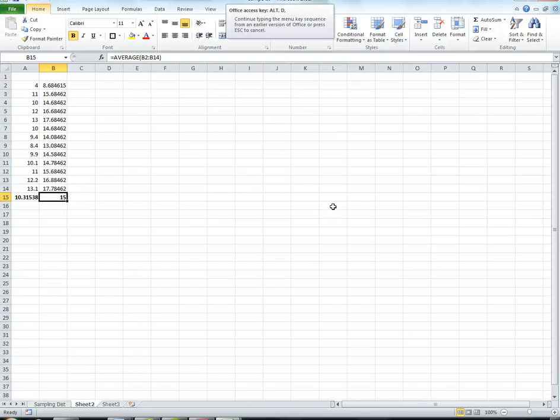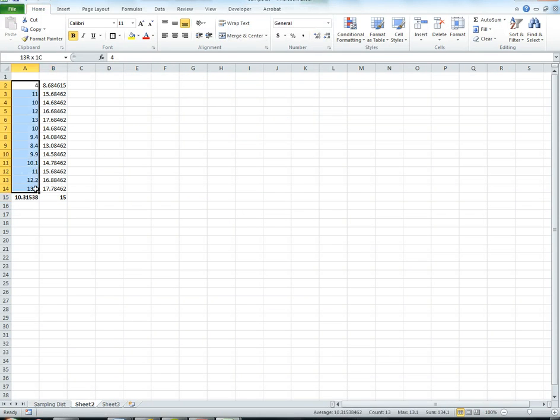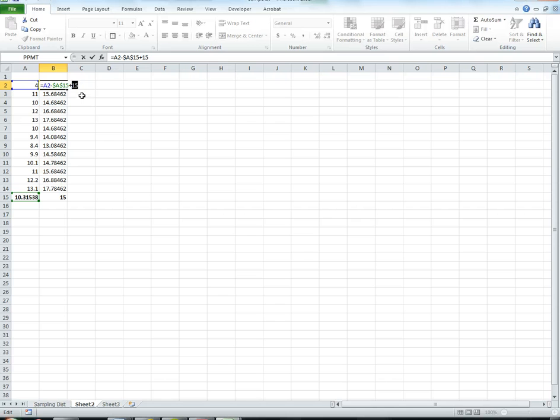Here I have that calculated, and you can see that here is the original data. It's centered at 10.3, and when I take each of the x's minus the x-bar, I get the deviation between the point and the mean, and then if I add it to 15, I get that deviation attached to my new mean.